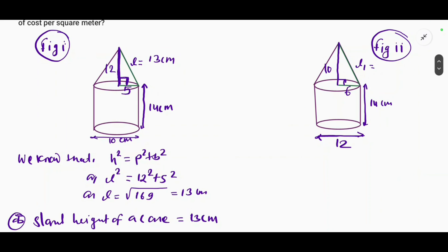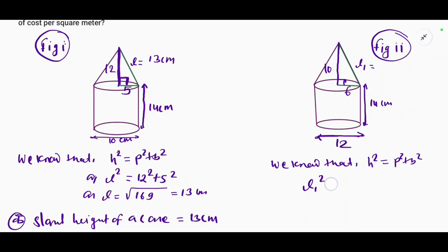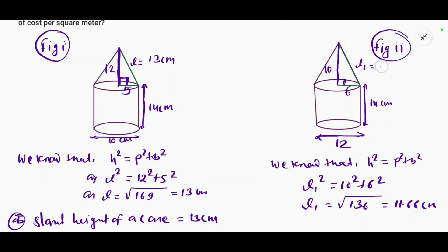We know that h-squared equals p-squared plus b-squared. Here, l1-squared equals 10-squared plus 6-squared. Therefore l1 equals the square root of 136, which equals 11.66 centimeters.